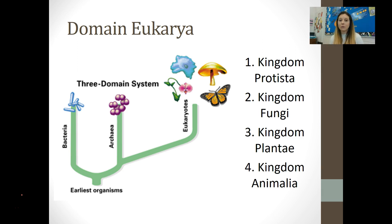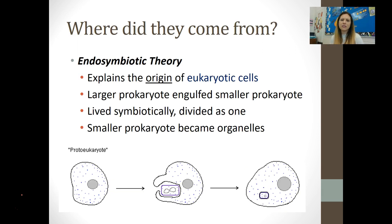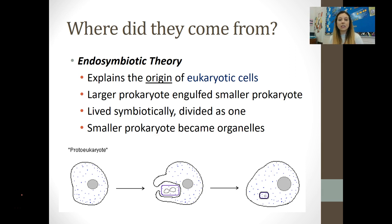They belong to the domain Eukarya because they all have eukaryotic cells — that is really the only thing these organisms all have in common. Today we're going to look at two of those kingdoms: kingdom Protista and kingdom Fungi. Where did these eukaryotic cells come from? How did we go from ancient bacteria and prokaryotic cells to the multicellular complex animals we have today? This is explained in the endosymbiotic theory, which explains the origin of eukaryotic cells.